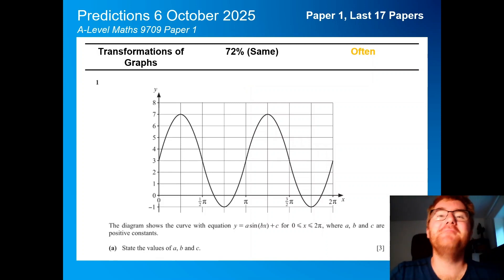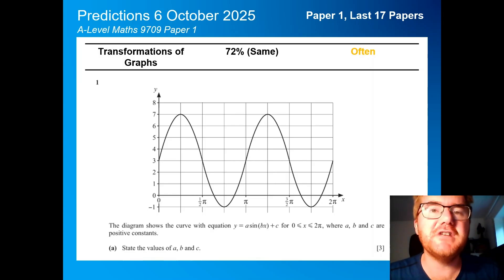Welcome to another Ginger Mathletician video. Today I'm predicting the A-level maths paper one on 6th October 2025, going through the last 17 papers to make sure these predictions are completely up to date for you.